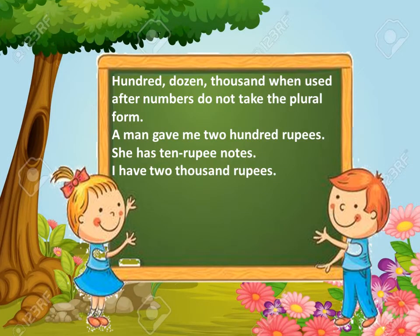Hundred, dozen, and thousand, when used after numbers, do not take the plural form. For example: a man gave me 200 rupees, she has 10 rupee notes, I have 2,000 rupees.